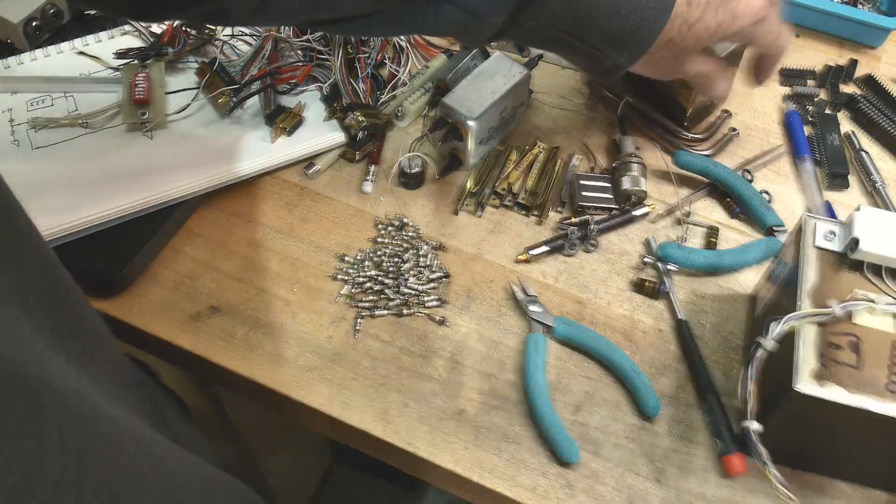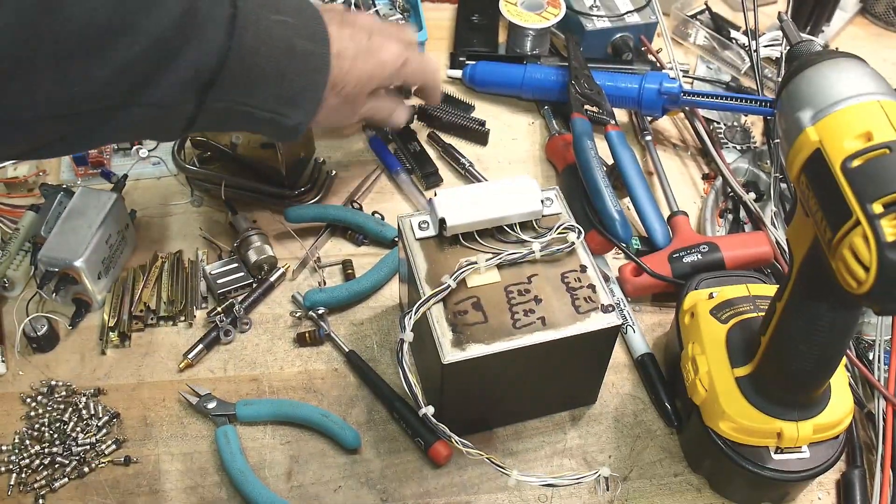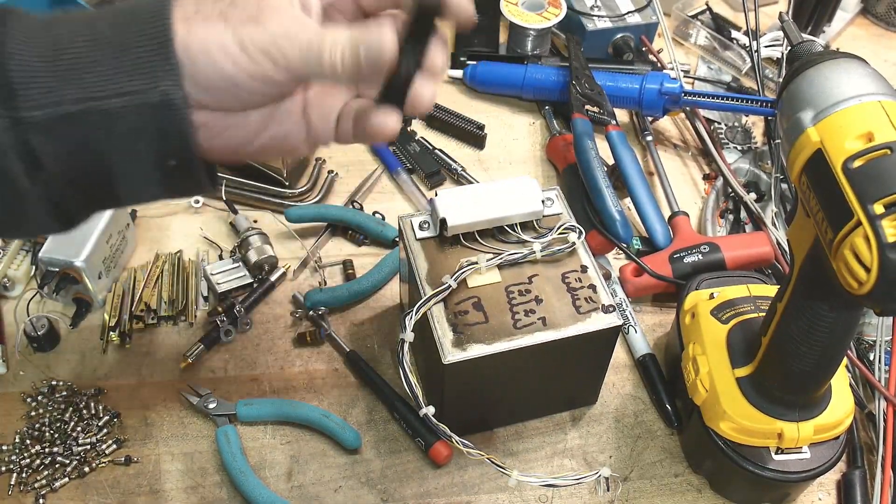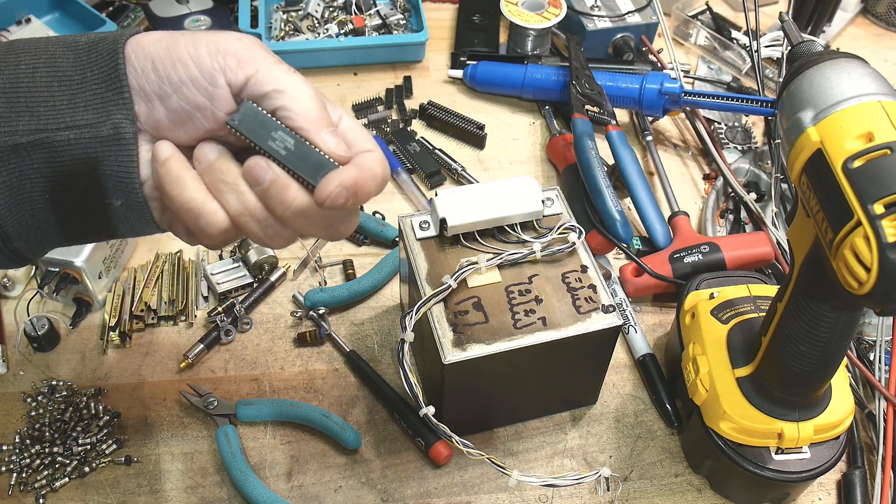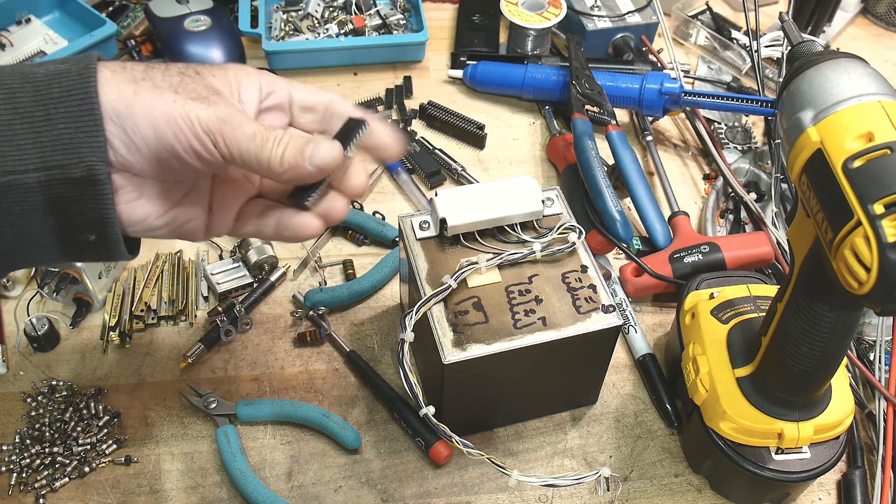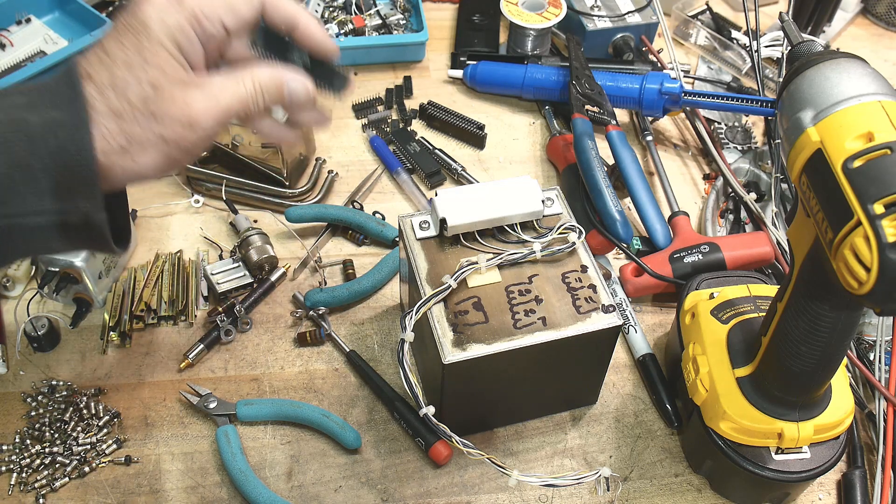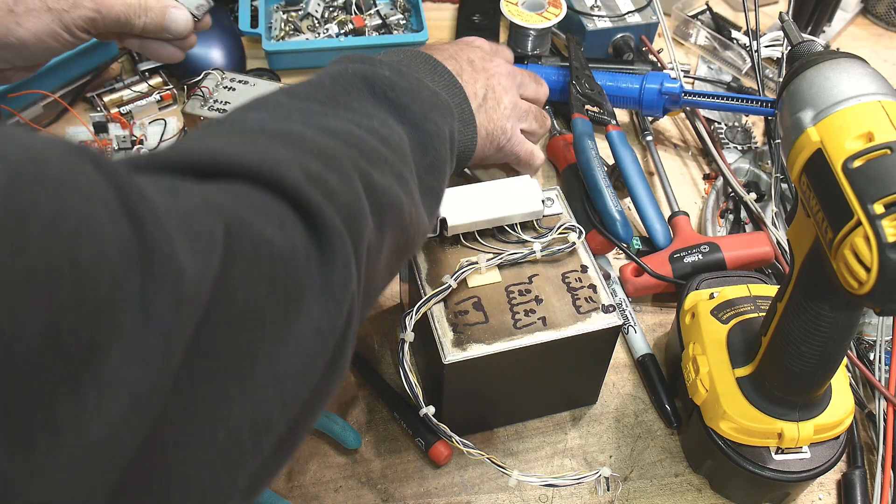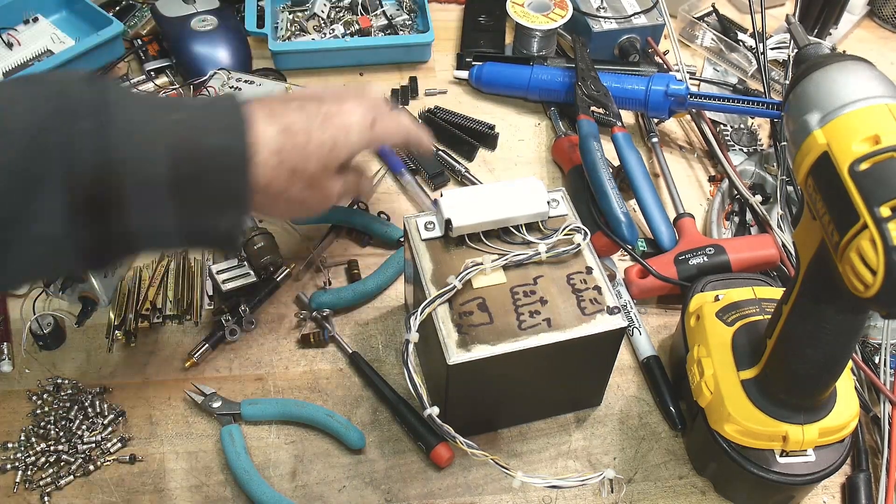What else did I scrounge? I pulled the ICs out. These are like the ICM 7211. These are four-digit drivers, so you have to use two of them for eight digits. So this is kind of cool.